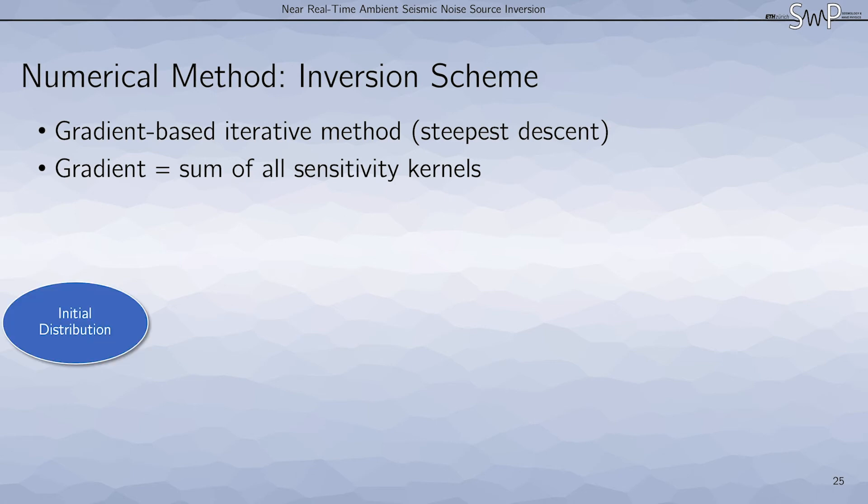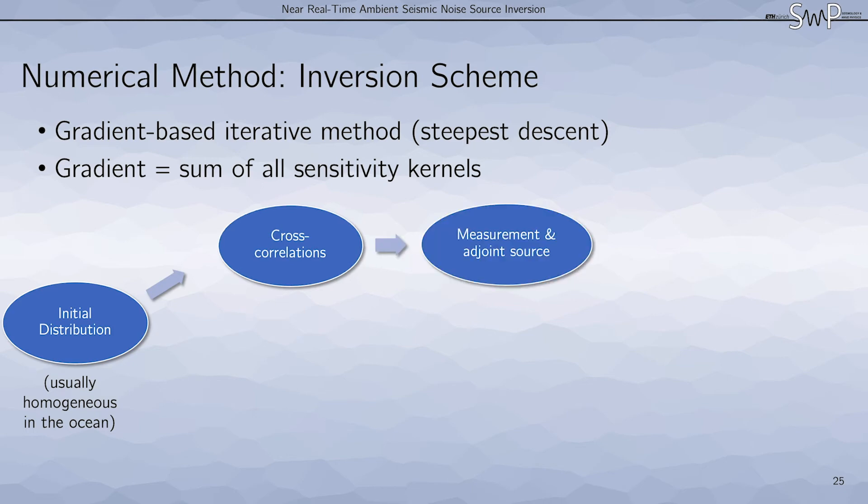The inversion starts with an initial distribution. We usually use a homogeneous distribution in the ocean, as we know that the secondary microseisms are created there. We then use this initial distribution to forward model cross correlations. We then take the measurement on these and the observed cross correlations and compute the adjoint sources. From this we get the sensitivity kernels that allows us to compile the gradient.